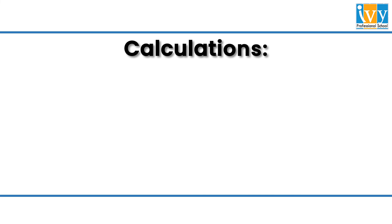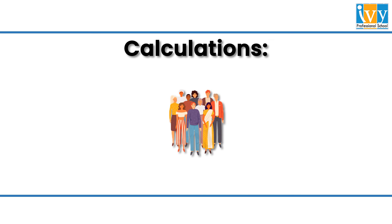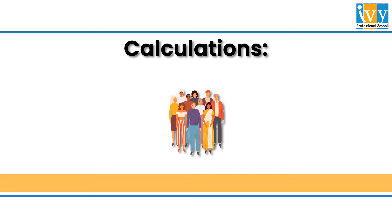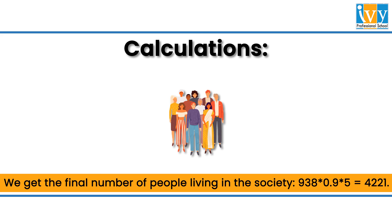The average household in India has approximately 5 members. We also know that some flats may not be occupied at the same time, so we estimate approximately 10% of the flats are unoccupied. To find the final number of people living in the society, we multiply the number of flats by 90% occupancy and by the average household size of 5. This brings us to the answer of approximately 4,221 people living in the housing society.